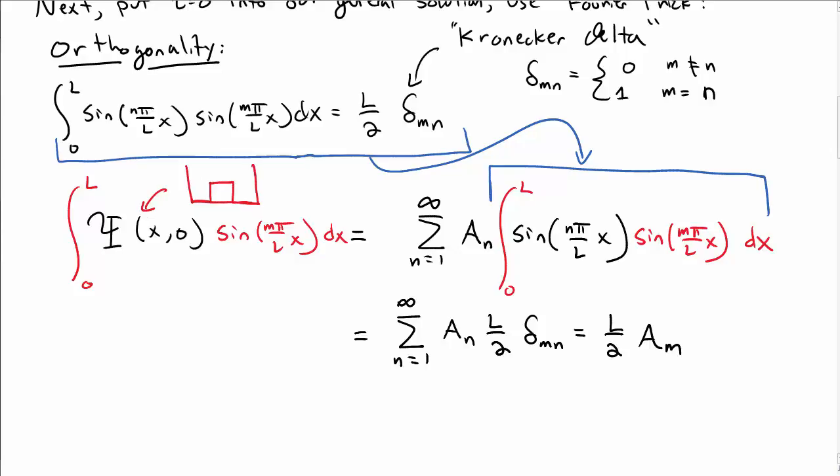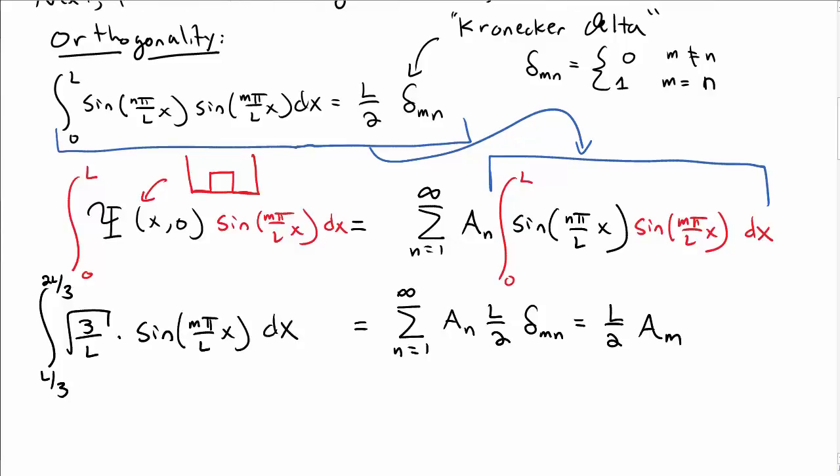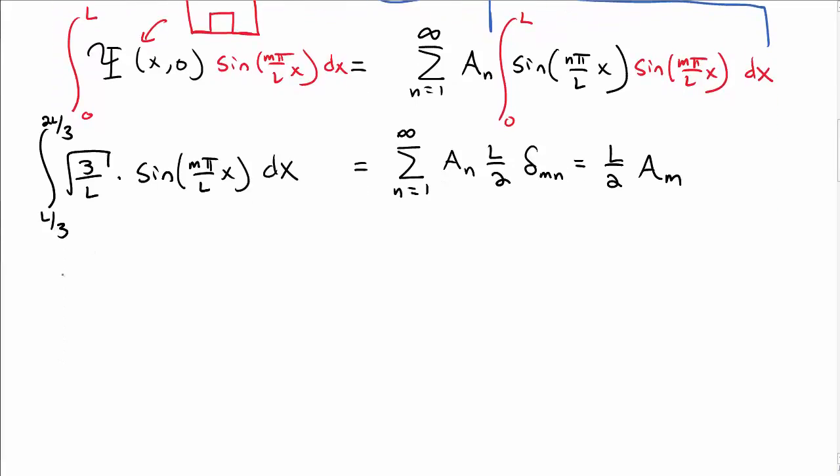Recall on the left-hand side that psi at x, 0 is this hat function somewhere in the middle. So this integral turns into an integral L over 3 to 2L over 3 times the square root of 3 over L, which was our value of C, sine of m pi over Lx dx. I can do that integral.